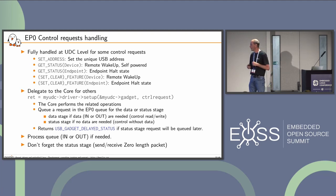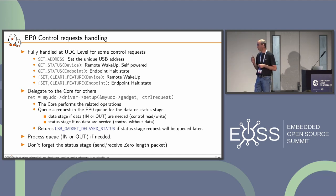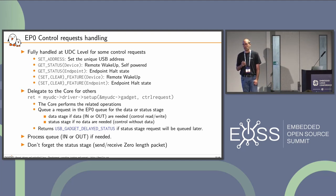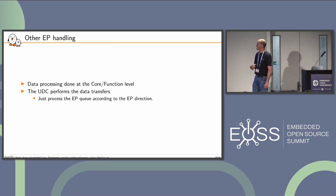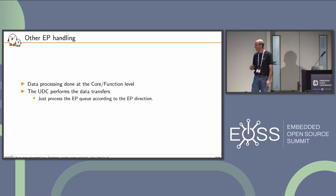Back in the UDC driver, we process the queue, IN or OUT, if needed. Don't forget the status stage — at some point we need to send or receive the zero-length packet related to the control status stage. For other endpoints, everything is done at the core or function level, so we simply perform data transfers without questions. Just process the endpoint queue according to the endpoint direction.